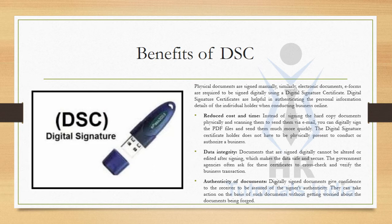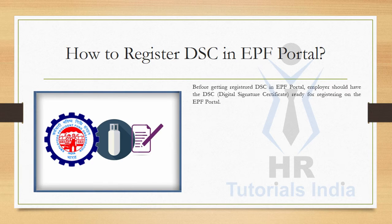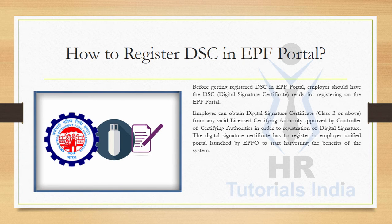Now, how to register DSC in the EPF portal. Before registering DSC, the employer should have a digital signature certificate ready. Without DSC, it is not possible to get registered on the EPF portal. The employer can obtain a digital signature certificate Class 2 or above from any valid licensed certifying authority approved by the Controller of Certifying Authorities.